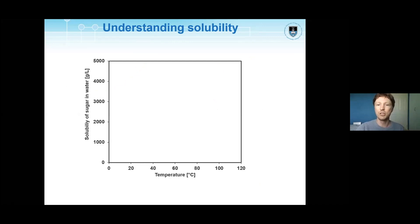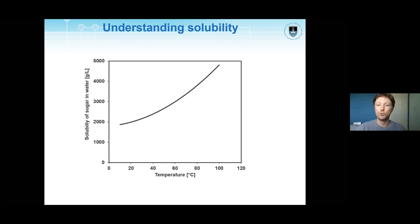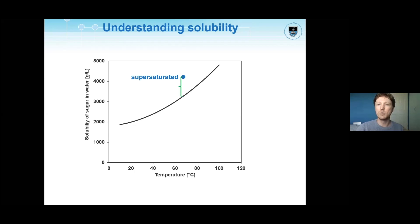Consider a simple example of sugar dissolving in water. A teaspoon of sugar would dissolve easily in your morning coffee. Even a jar of sugar would all dissolve at 100 degrees — you'd need 4.75 kg of sugar before no more would dissolve. At 25 degrees, you'd need just 2.2 kg. Plotting this over a full range of temperatures gives the solubility curve: under the curve is under-saturated, on the curve is saturated, and above is super-saturated.